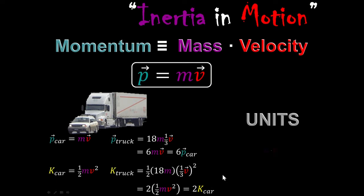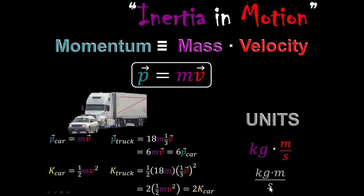The units of momentum? Mass is measured in kilograms and velocity in meters per second, so kilogram meters per second are the MKS units of momentum. There is no common one-word unit of momentum.